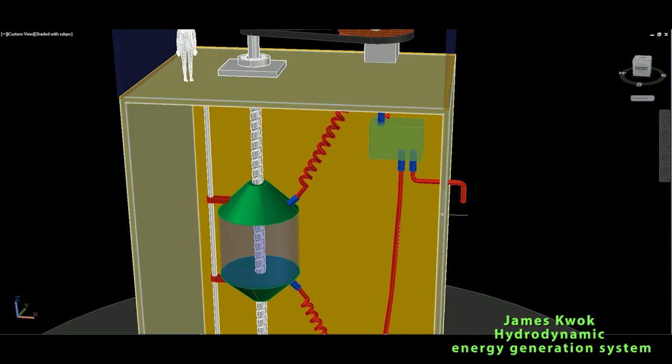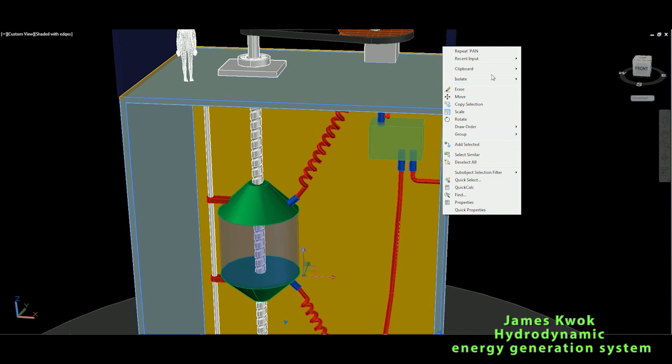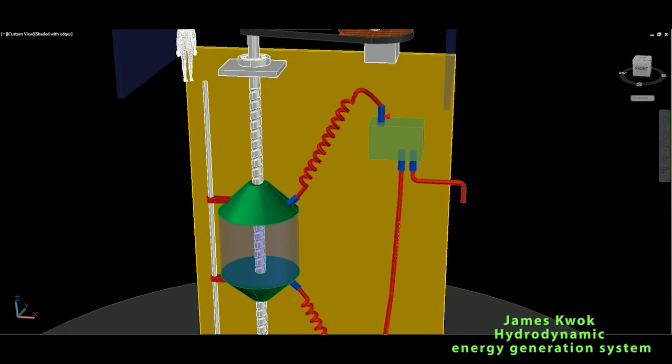When this buoy comes to the top, to this level, we will let the air out. We have a non-return valve so the air cannot come back.